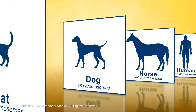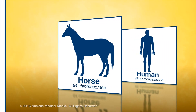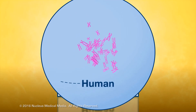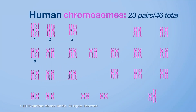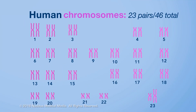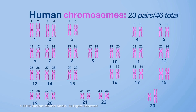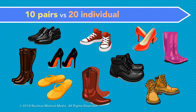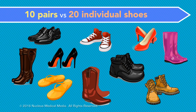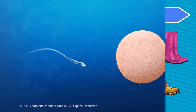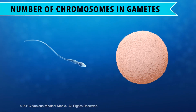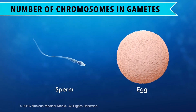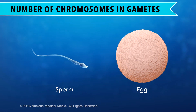Different types of organisms have different numbers of chromosomes. Every cell in your body is called a somatic cell, except your gametes. Human somatic cells have 23 pairs of chromosomes, for a total of 46. It's like the difference between how many pairs of shoes you have versus your total number of shoes. Gametes are the exceptions to this rule. Human eggs and sperm have only one chromosome from each pair, for a total of 23.